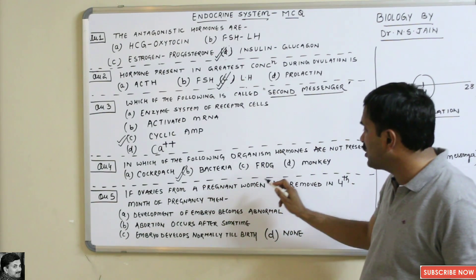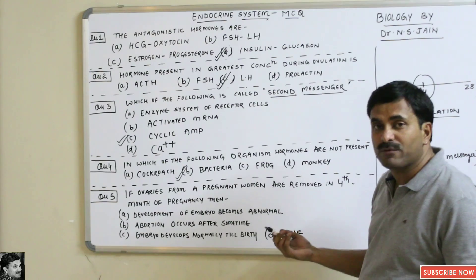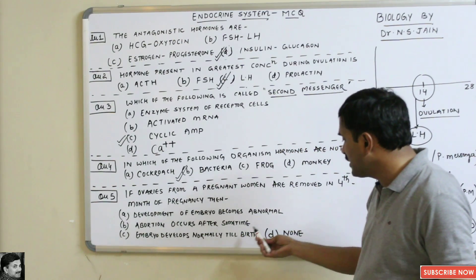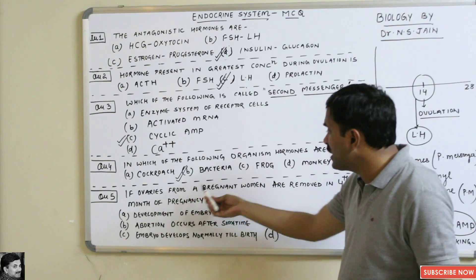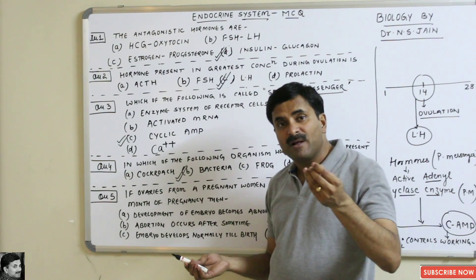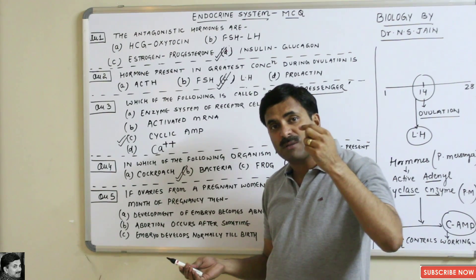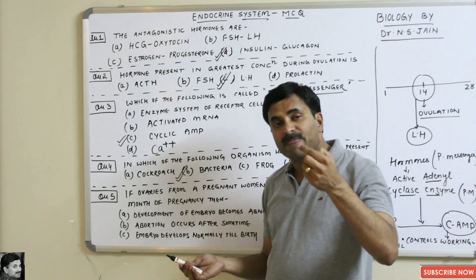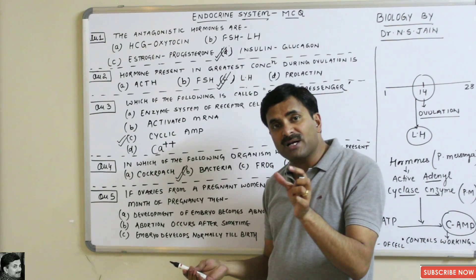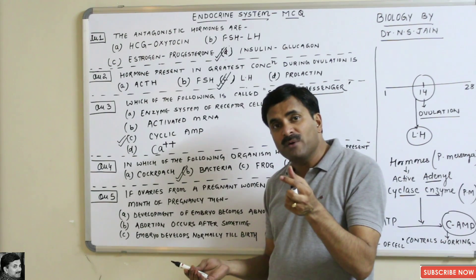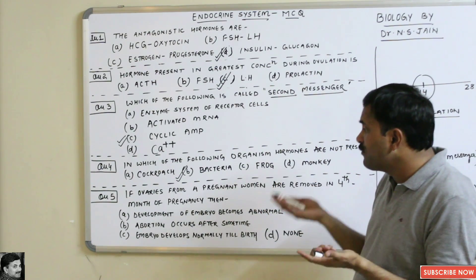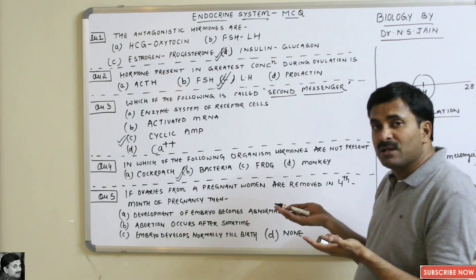Question number five: if ovaries are removed from a pregnant woman in the fourth month of pregnancy, what will happen? The options are: embryo development becomes abnormal, abortion occurs, embryo develops normally till birth, or none. The ovary is important for ovulation — the ovum travels to the oviduct, fusion occurs, a zygote is formed, and the developing embryo is implanted in the uterus.